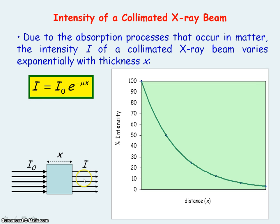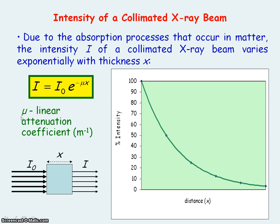I is the intensity of the collimated X-ray beam after passing through thickness x, and I₀ represents the initial intensity of the collimated X-ray beam. Mu (μ) is the linear attenuation coefficient of the medium through which the X-rays are travelling. Its units are per metre, because the exponential does not have units and x is measured in metres.